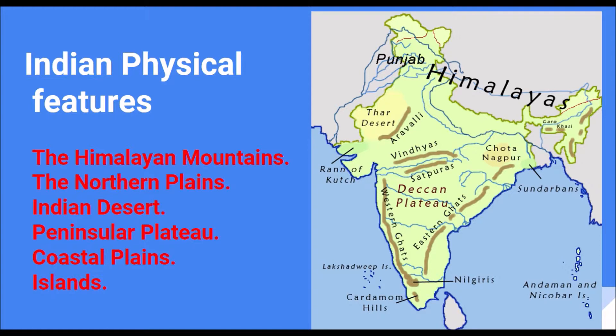Broadly we can divide the Indian physical features into the Himalayan mountains on the north, the northern plains, the Indian desert, the peninsular plateau, the coastal plains and the island groups of India.